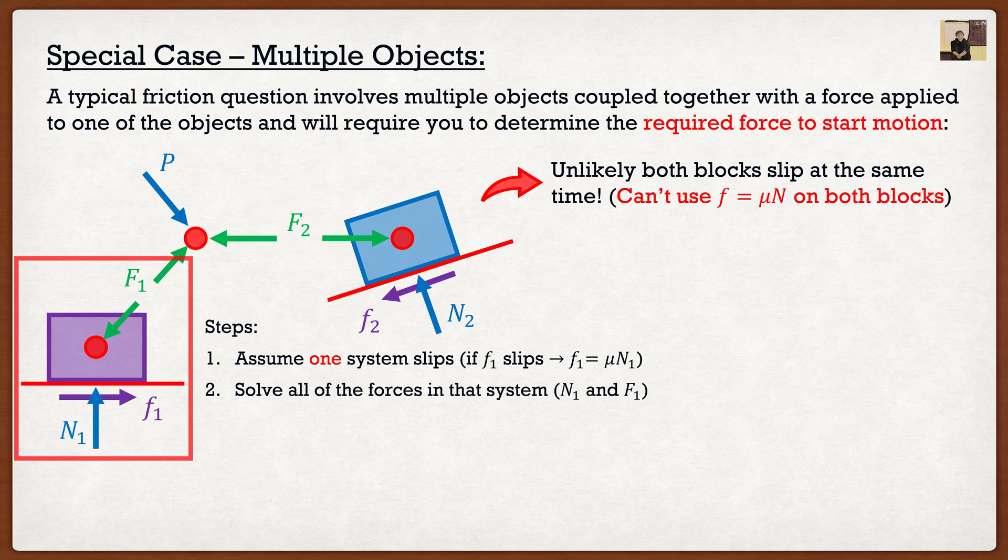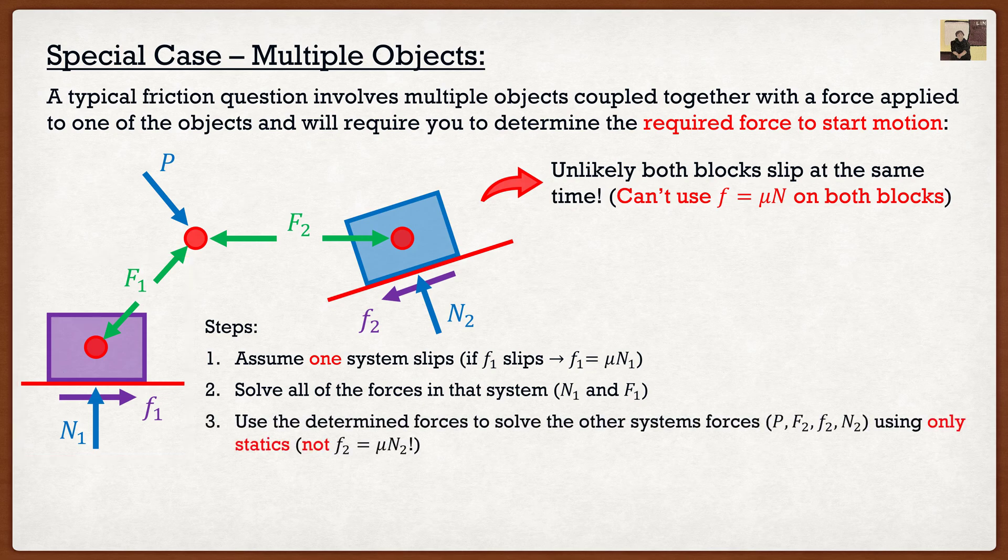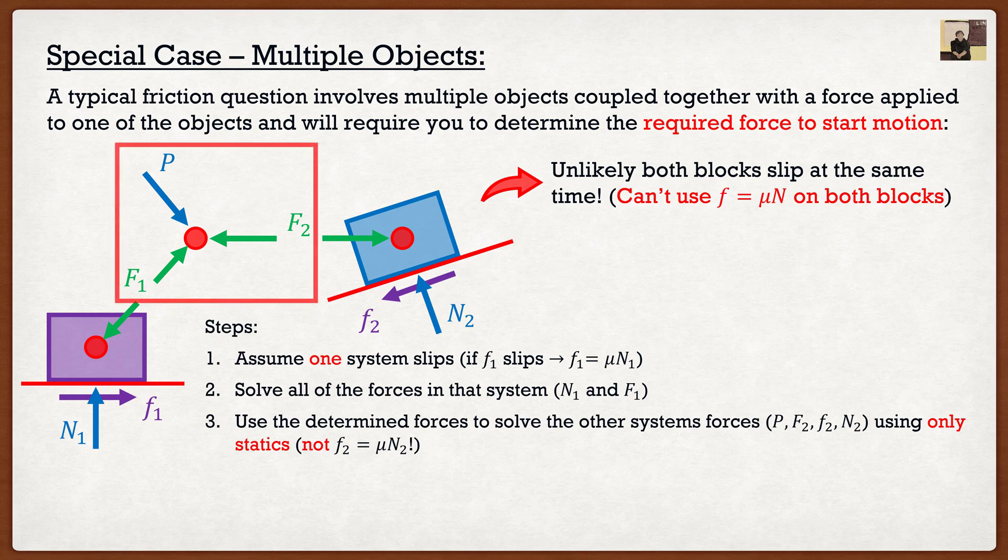All right, so I assume that one system slipped and I solved for all the forces in that system. Now that I know F1, I can actually use statics to determine the forces in the other system. So if I were to look at this system right here and I now know what F1 is, I can solve for P and I can solve for F2.